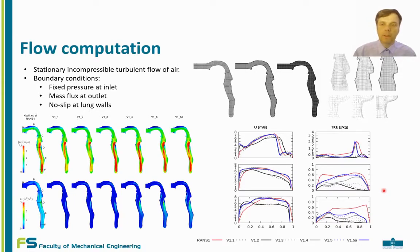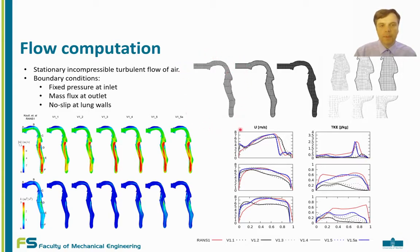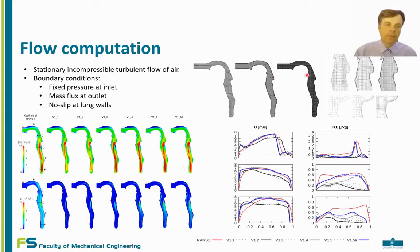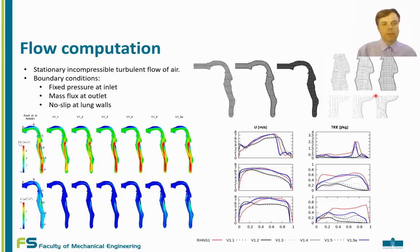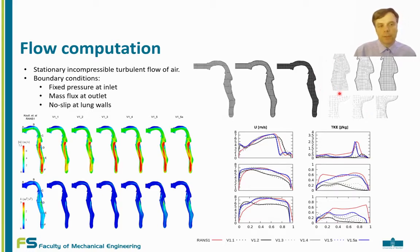Now let us look at a couple of computational results for the flow computation in the lung. First, we designed several computational meshes in order to solve this problem. We used the finite volume method to solve the equations, and the software used was OpenFOAM. Different sizes of meshes were constructed with different numbers of boundary layers to capture the boundary layer of the flow. Due to the quite complex geometry, producing a high-quality mesh proved quite a challenge.